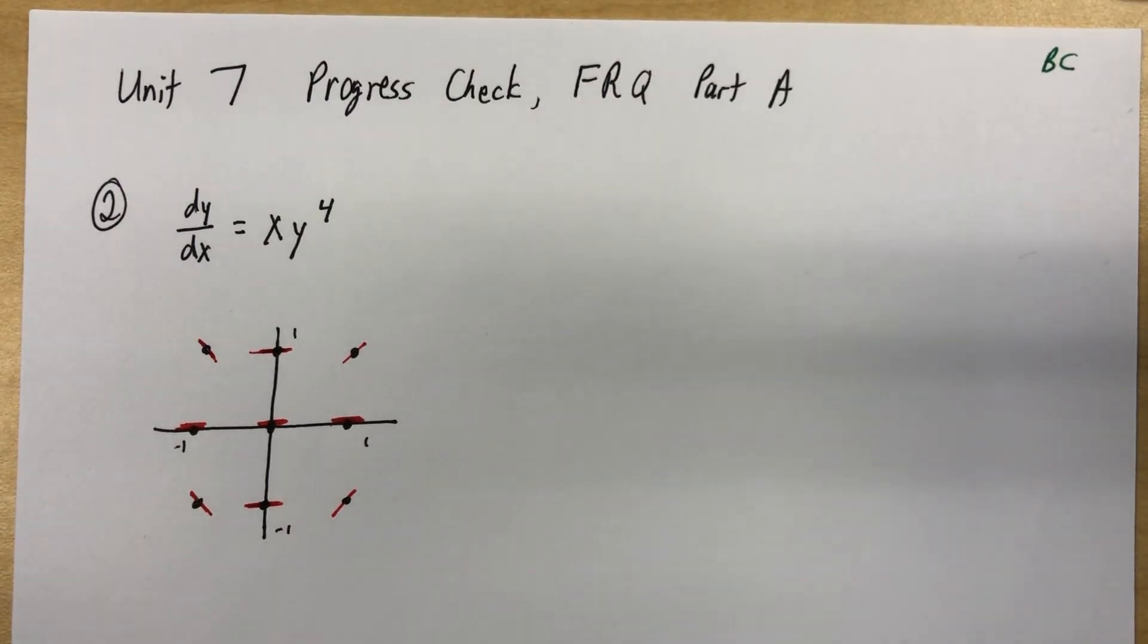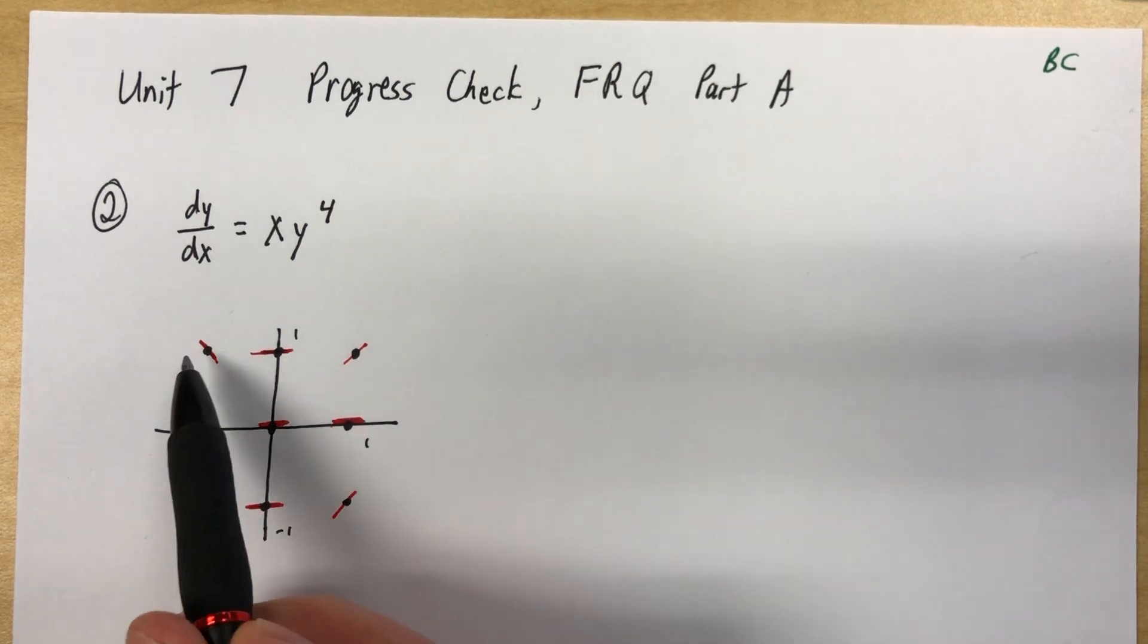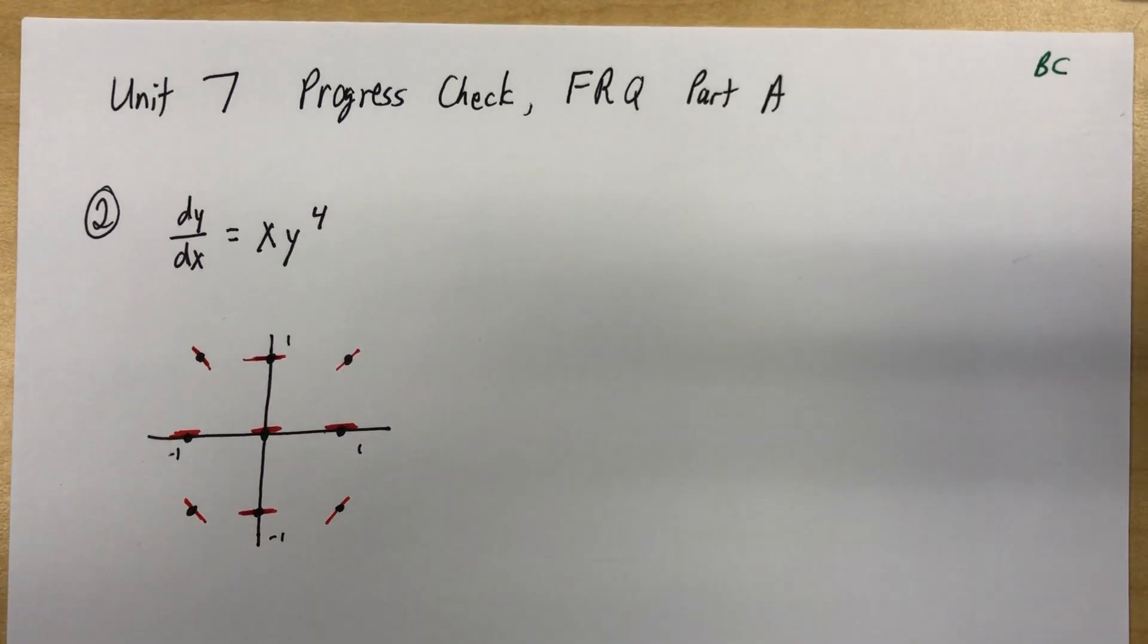There we go. So that is our slope field. And the way the scoring went on this was they would give you credit for the 0 slopes, and then they gave you another point for getting those four right.